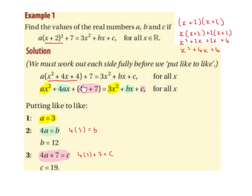Now we can group together the 4a and the plus 7 by putting brackets around them, because technically this is the constant. There's no x attached to either the 4a or the 7, so we group these together with brackets and they become the constant.